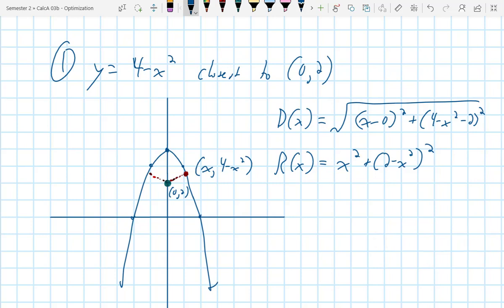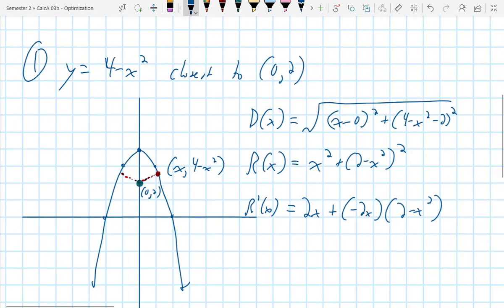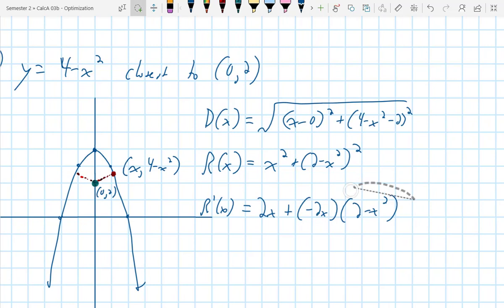So what I'm going to do with this, okay, first derivative, we're going to do r prime of x equals 2x plus I need to do a chain rule of this. So negative 2x times (2 minus x squared) to the first power. And I'm missing something. I'm missing the 2.